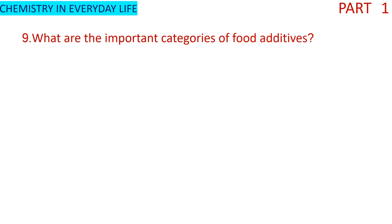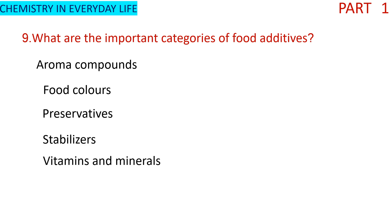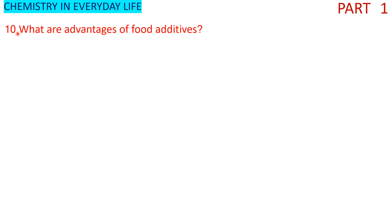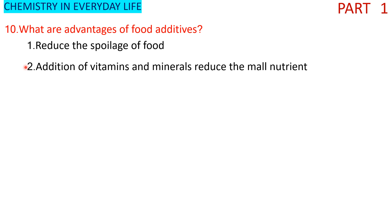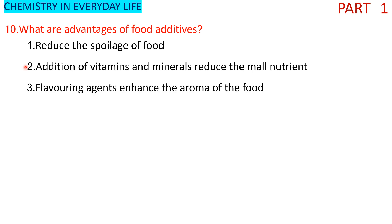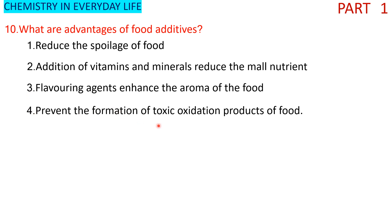What are the important categories of food additives? Food additives include food colors, preservatives, stabilizers, vitamins and minerals. The advantages of food additives are: first, they reduce the spoilage of food; second, addition of vitamins and minerals provides more nutrients; third, they prevent the formation of toxic oxidation products of food.